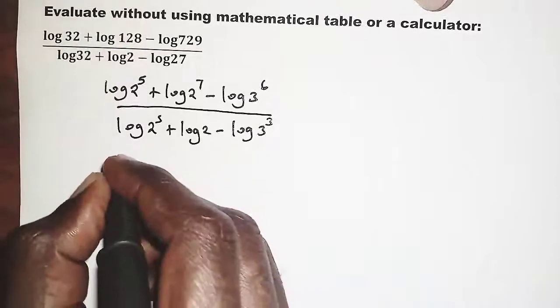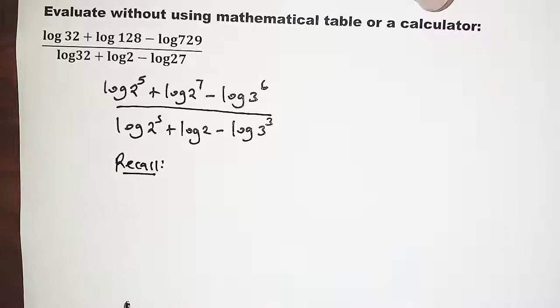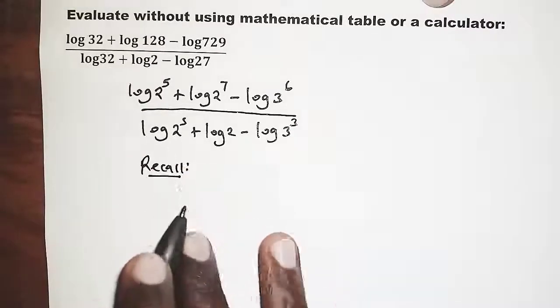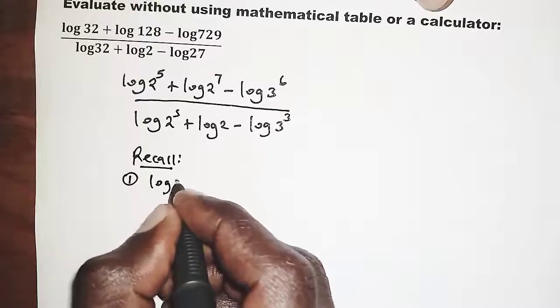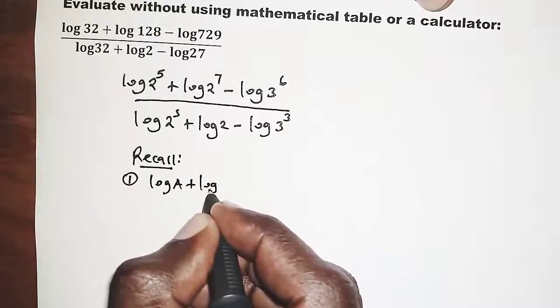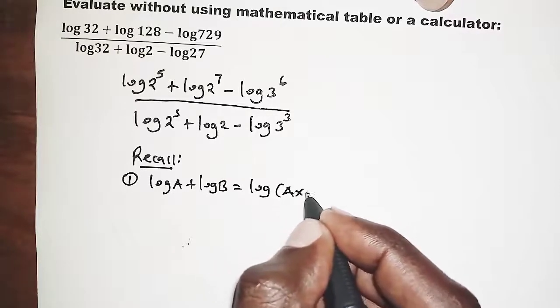We are going to recall the laws of logarithm that are going to apply here. The first one: logarithm of a plus logarithm of b should be logarithm of a times b.